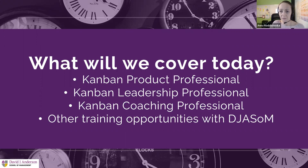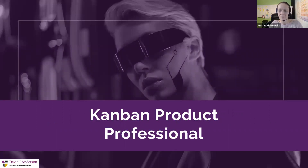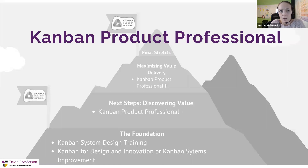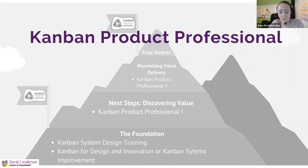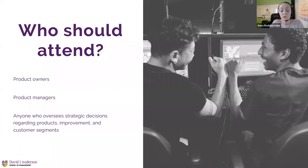Let's start with Kanban Product Professional, or KPP. If we look at this learning path, the suggested foundation is your KMP credential, consisting of Kanban System Design training and either Kanban for Design and Innovation or Kanban Systems Improvement — both of which give you the Kanban Management Professional credential. The next step is KPP Part 1, which is about discovering value, and KPP Part 2, which is about maximizing value delivery.